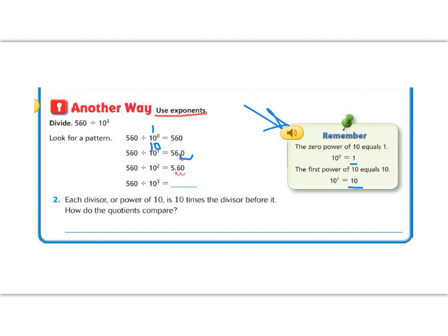Next, we have 560 divided by 10 to the power of 2. 10 to the power of 2 is 10 times 10, which is 100. 100 has two zeros, so we're going to move to the left two places: 1, 2.